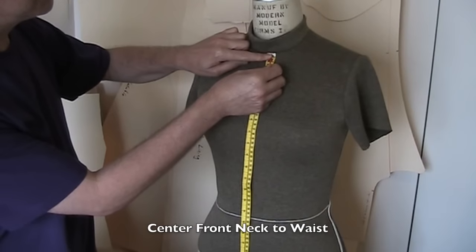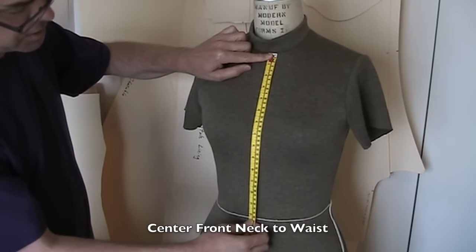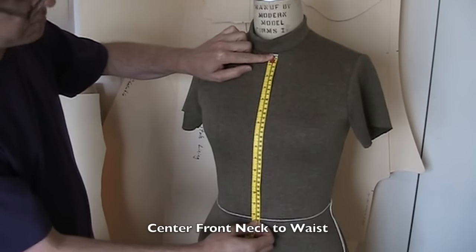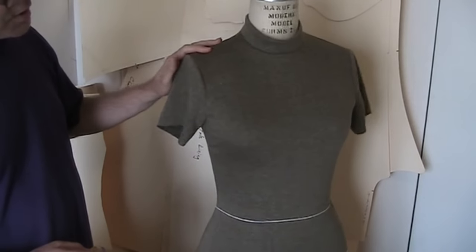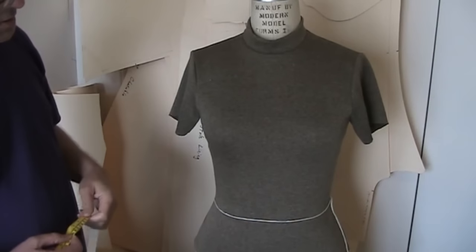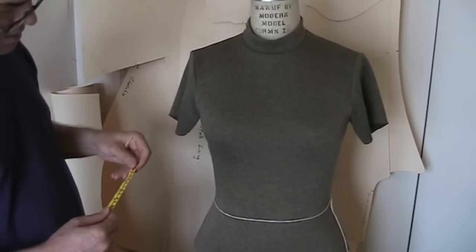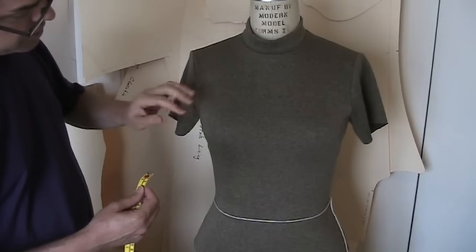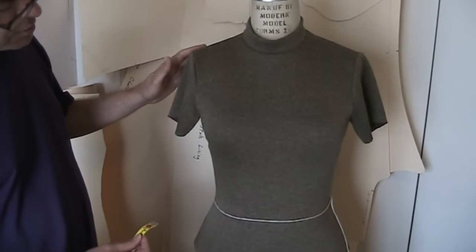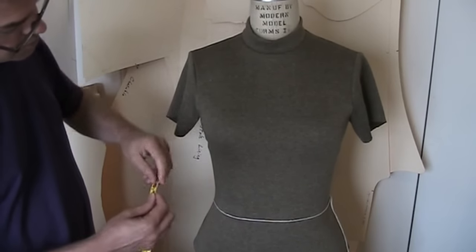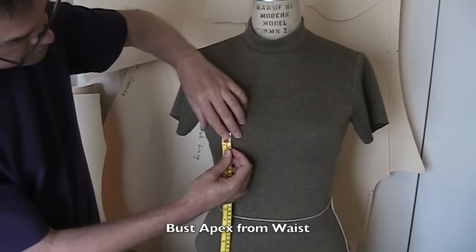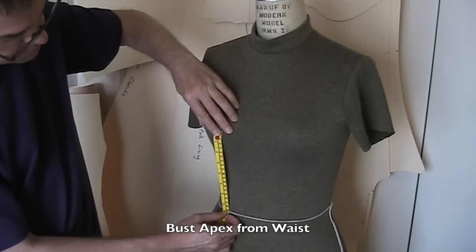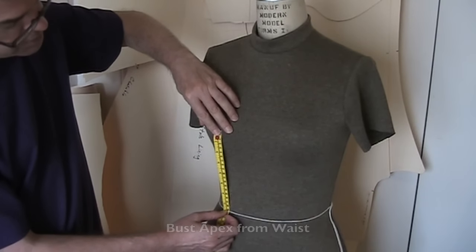You'll need the center front neck to waist. I'm getting 14 and a quarter. You'll need to locate the apex, the fullest part of the bust. You can measure the apex down from the high point shoulder, but for this particular draft method, it's best to measure up from the waist. So I'm going to find the fullest part of the bust and measure up from the waist. I'm getting seven and a half.